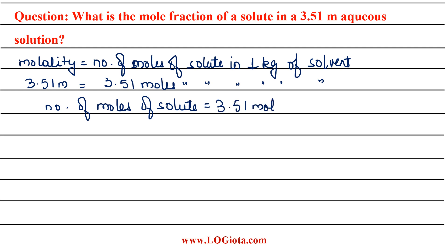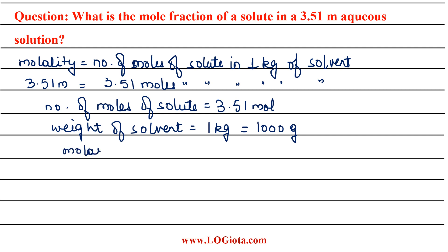Now we need to calculate the number of moles of solvent. For that, the weight of solvent is given as 1 kg, which can also be written as 1,000 grams. We know that the molar mass of water is 18 grams per mole. Since this is an aqueous solution, water is the solvent.